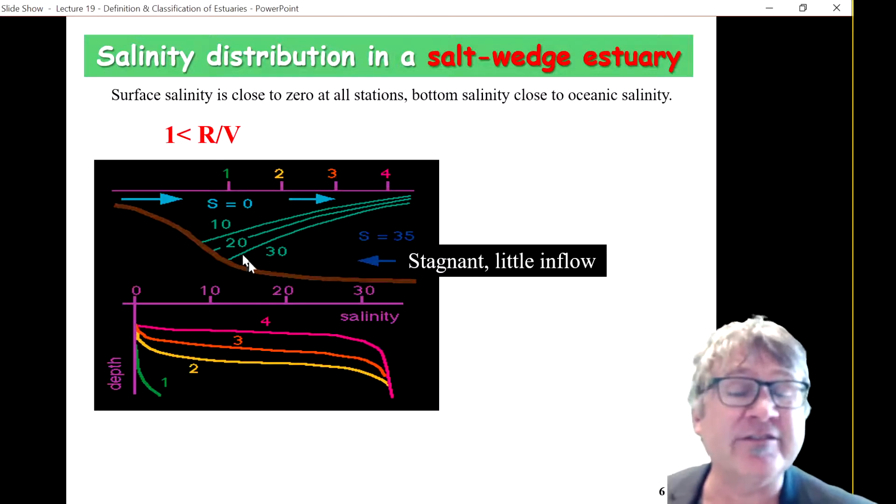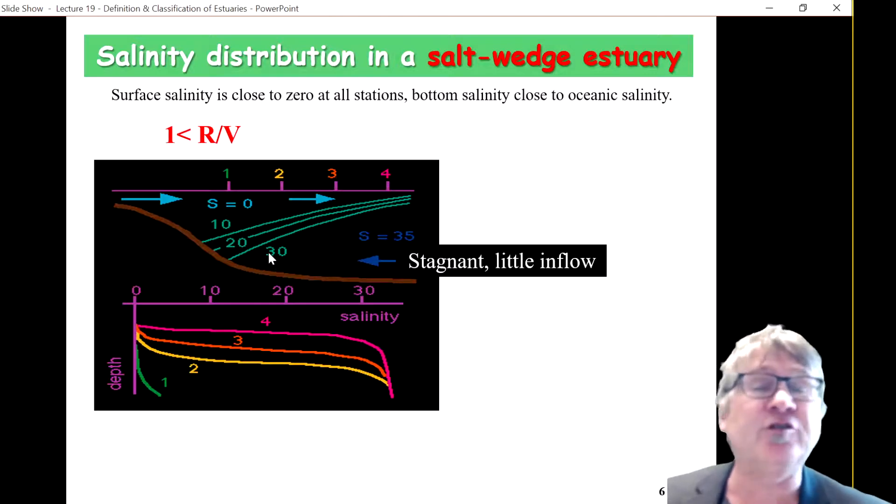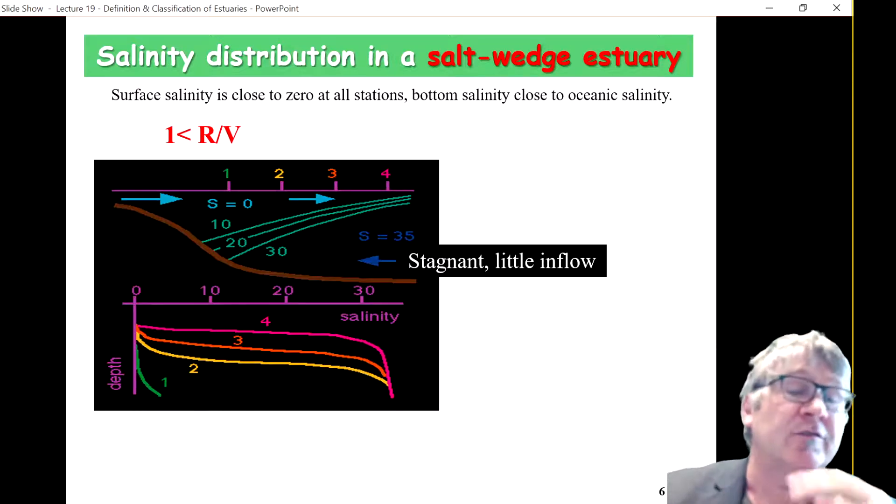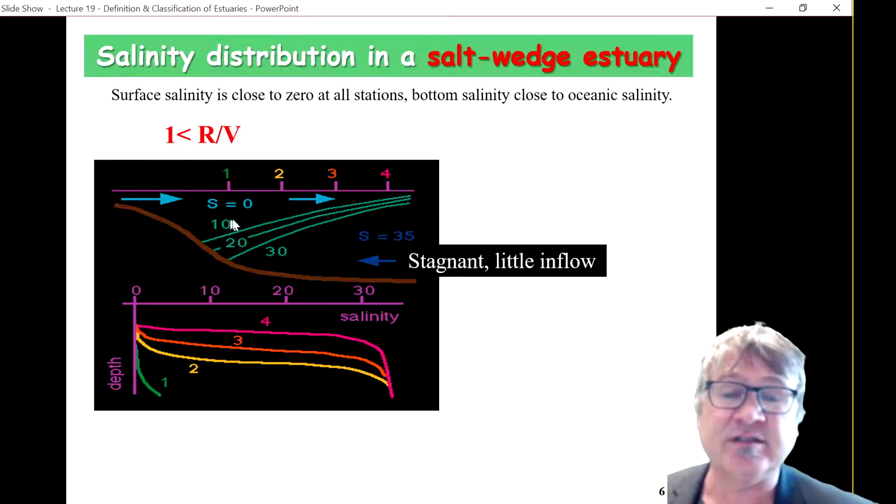You have a very sharp transition zone, and this is a very turbulent region, because you have often very strong river flows, and they create lots of turbulence in this transition zone.